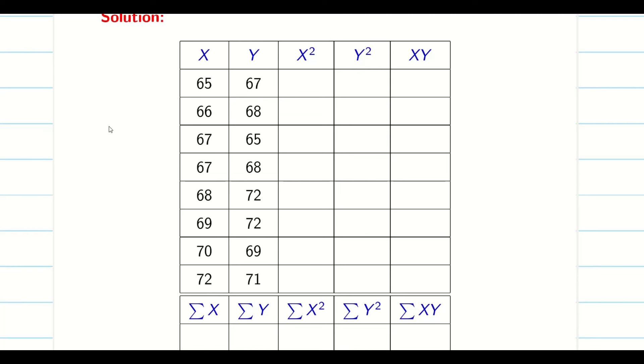So x and y are given in the question. Let us fill this data. And you can easily find x square, y square and xy using your calculator. Either you feed the formula or you can go for direct multiplication. So let us fill the data one by one.